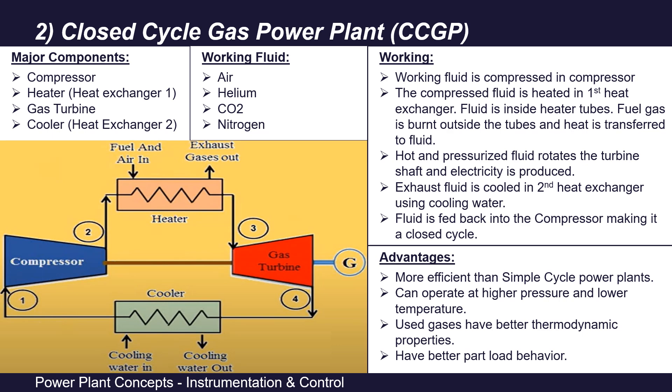A simple open cycle gas power plant has very poor efficiency of 30 to 40 percent because most of the energy is wasted to the atmosphere. There should be some way to utilize that energy, but those exhaust gases cannot be fed back into the compressor again. As a solution, closed cycle gas power plants are designed. Here, instead of rotating the turbine blades with exhaust gases, we have a working fluid that does not come in direct contact with the exhaust gases.